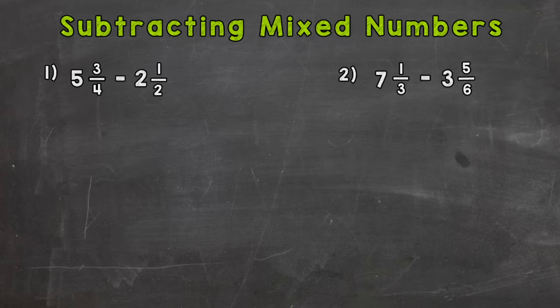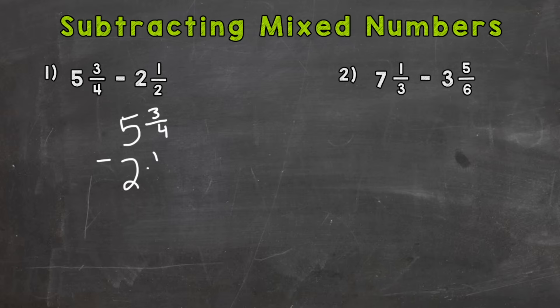For number one, we have 5 and 3/4 minus 2 and 1/2. The first thing I like to do when subtracting or adding mixed numbers is rewrite the problem vertically, up and down. So underneath my original problem, I'm going to rewrite 5 and 3/4 minus 2 and 1/2. Notice I have the fractional part of the mixed numbers lined up and the whole number part lined up.